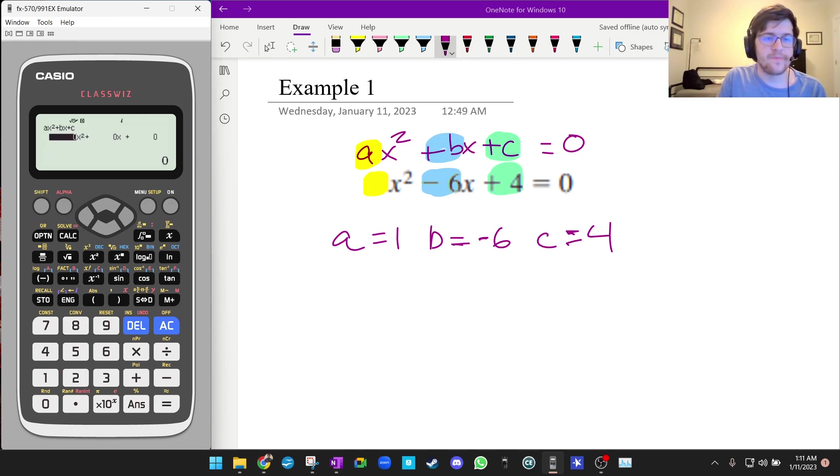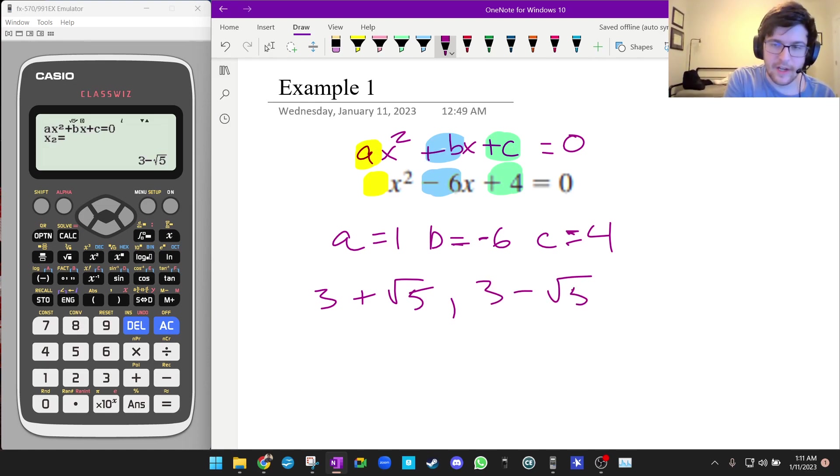You see it gives us this nice menu. Now we're going to type in our ABC: 1, enter, -6, enter, and 4, enter. And now I press enter. It says 3 + √5. Then if you press down, you get 3 - √5. Another way you could write that is x = 3 ± √5.